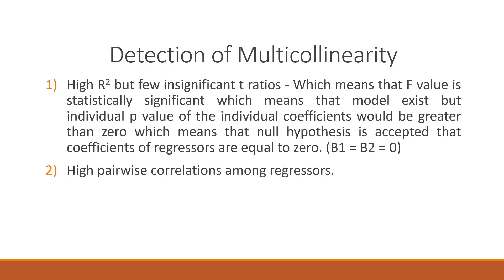How to detect multicollinearity? First: high R-squared but few insignificant t-ratios — meaning the F-value is statistically significant and the model exists, but the individual p-values of the coefficients would be greater than 0.05, meaning the null hypothesis that the coefficients are equal to zero is accepted. Individual variables' contributions are tested with the t-test, whether all variables jointly contribute is tested with the F-test, and the overall explanatory power of the model is measured with R-squared.